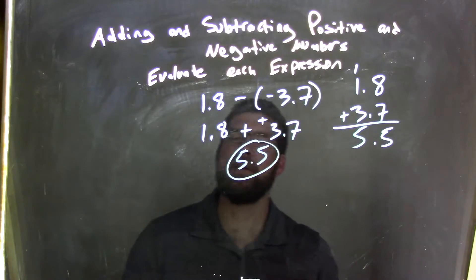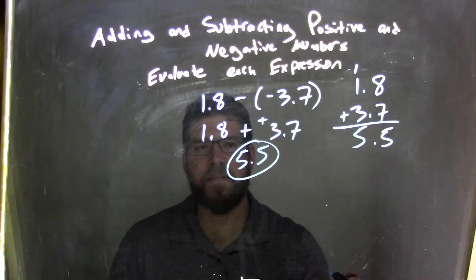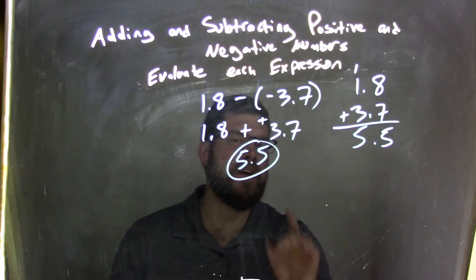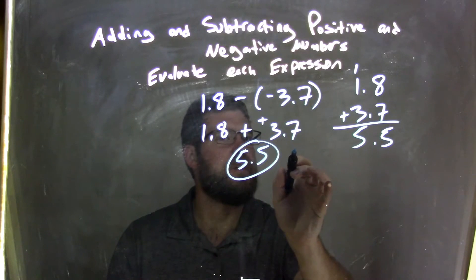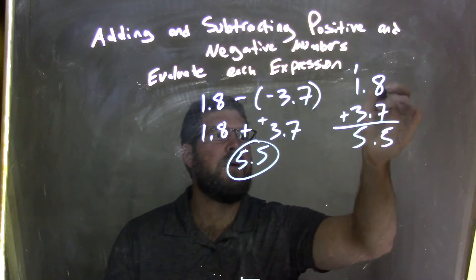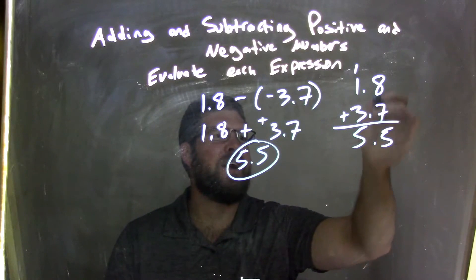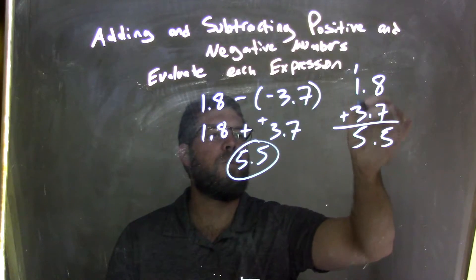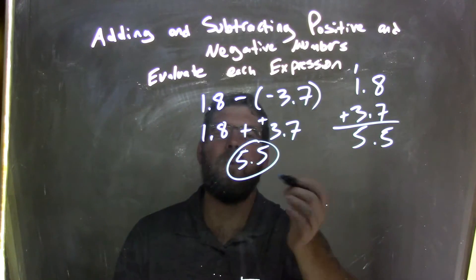So, again, let's recap. We started with 1.8 minus a negative 3.7. We know subtracting a negative is the same thing as adding a positive. So we have 1.8 plus a positive 3.7. Keep the decimal in line. 8 plus 7 is 15 — write the 5, carry the 1. 1 plus 1 plus 3 is 5, so our answer here is 5.5.